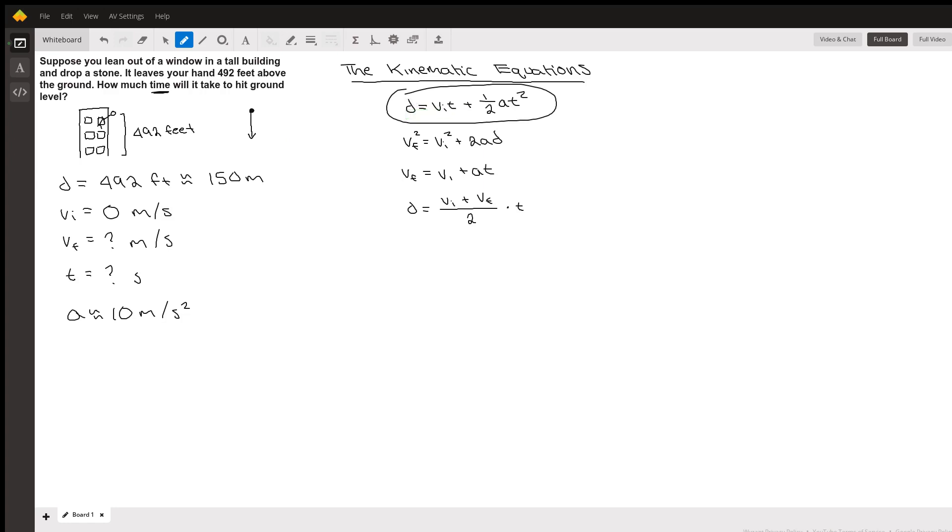d is about 150 meters, and that equals the initial velocity zero times t, plus one-half times the acceleration, which is 10 meters per second squared, times t squared.